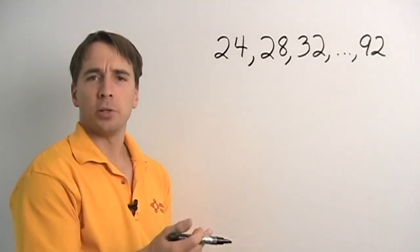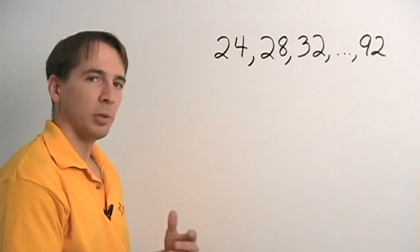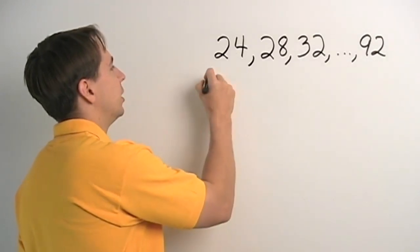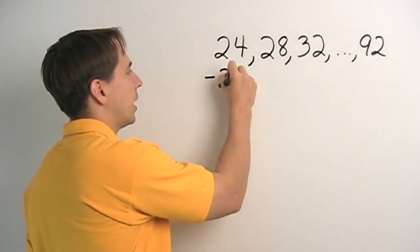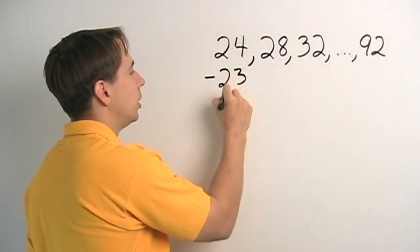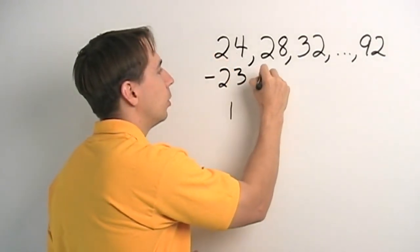Well, before what we did was we turned the first number into 1, hoping to turn the list into 1, 2, 3. So let's try that here. We did that usually by subtracting or adding to the first number to turn that into 1. Here we subtract 23 from 24, we get 1.